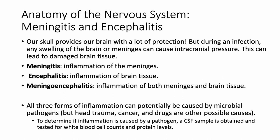Before discussing specific bacterial and viral infections, be familiar with some terminology. Meningitis and encephalitis are important because the skull, while protective, means any swelling or pressure from inflammation can lead to intracranial pressure and brain damage. Meningitis is inflammation of the meninges, encephalitis is inflammation of brain tissue, and meningoencephalitis is inflammation of both. These can be caused by microbial pathogens or non-pathogenic causes like head trauma, cancer, and drugs.